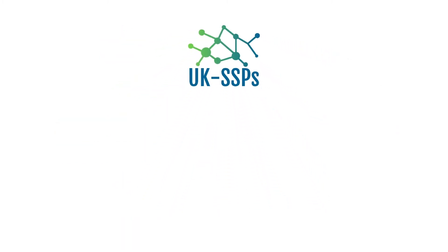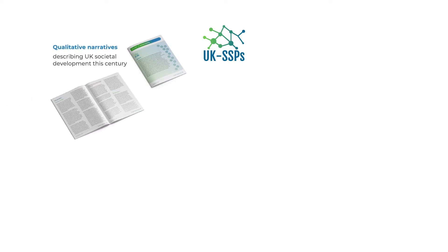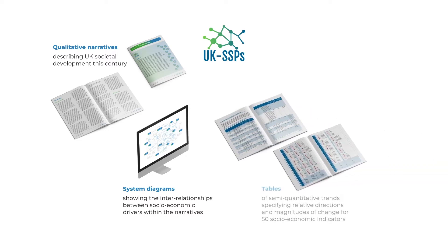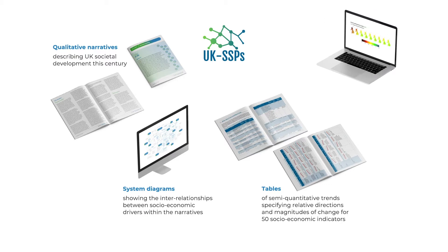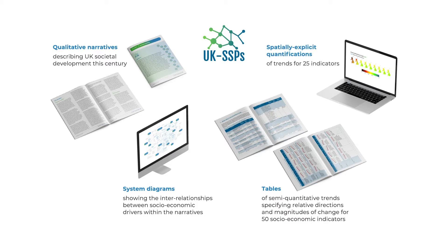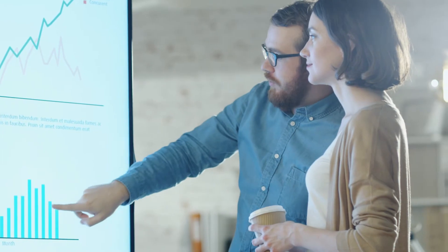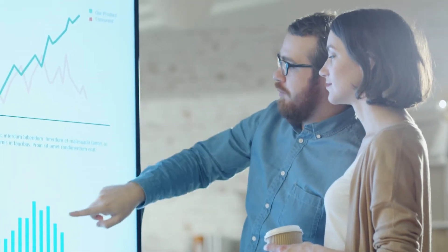Four products have been produced for the UK SSPs: qualitative narratives describing UK societal development this century; system diagrams showing the interrelationships between socioeconomic drivers within the narratives; tables of semi-quantitative trends specifying relative directions and magnitudes of change for 50 socioeconomic indicators; and spatially explicit quantifications of trends for 25 indicators. In this video, we will introduce each of these products and how they can be used by research and policy communities.